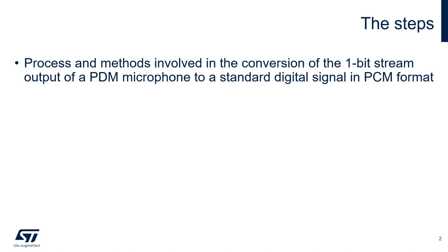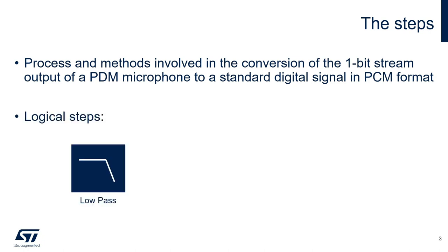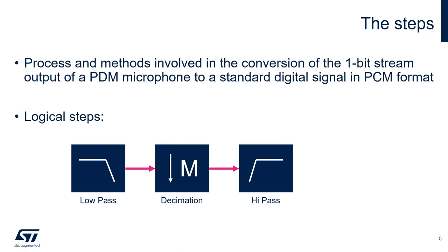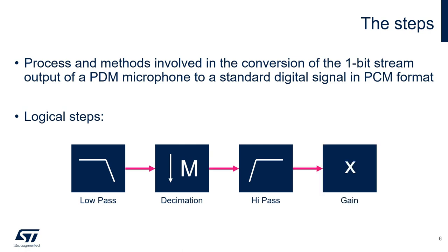Several steps are involved in the process. We have a low-pass filter, a decimation phase, a high-pass filter for DC offset removal, and finally a gain stage. We will go in depth on each one of the involved steps to see why it's required and will give a general idea on how it can be implemented.